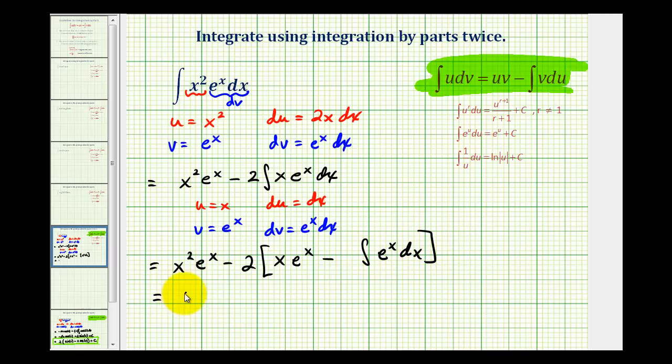So we have x squared e to the x. Here we'll have minus 2x e to the x. Then we'll have plus two times the integral of e to the x dx. So then finally we have x squared e to the x minus 2x e to the x, and the antiderivative of e to the x is just e to the x, so we'll have plus 2 e to the x and then finally plus C.